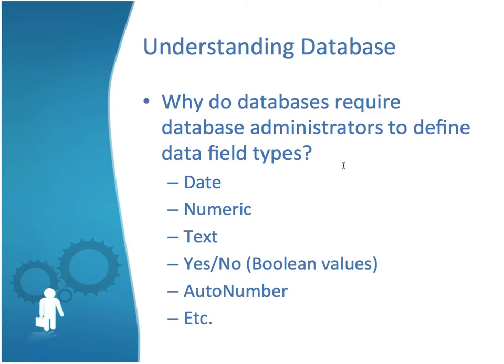Auto number is another data type, and typically it can be used for a key field — it gives a unique identifier to each entry within a table. There are several other data types, and some of these vary depending on the application you're using, from Microsoft Access to a more corporate environment like Oracle, DB2, or some other database management system.